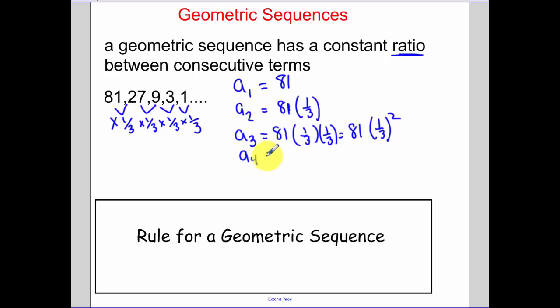To get to our fourth term, which was one, two, three, four, we took 81 and we multiplied by one-third three times. When I multiply by that three times, that's like saying to the third power. So just as I did before, how does our term number compare with that value? Our formula for our nth term is our first term times the common ratio r to the n minus one power.